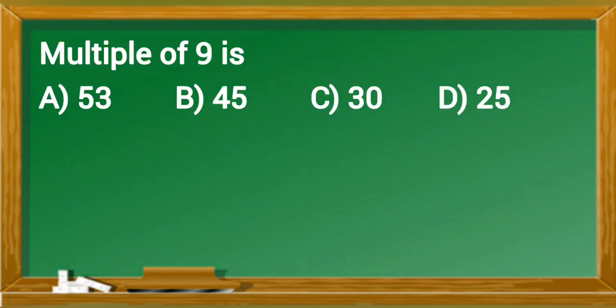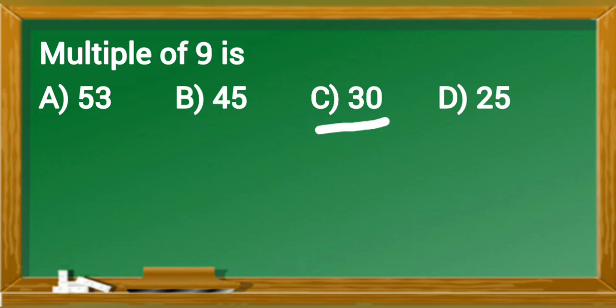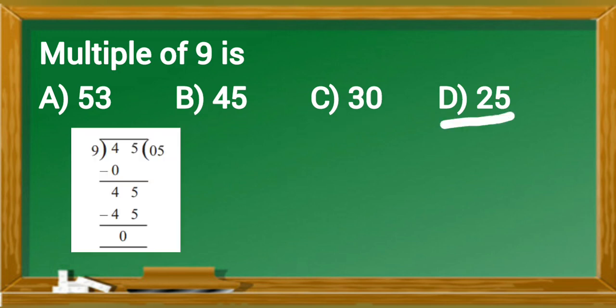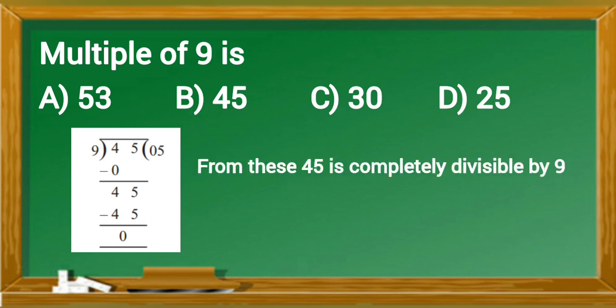Multiple of nine: option A is fifty-three, option B is forty-five, option C is thirty, and option D is twenty-five. From these, forty-five is completely divisible by nine, so forty-five is a multiple of nine. That means option B is the correct answer.